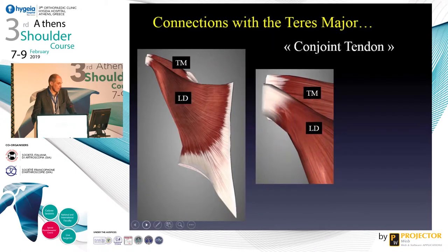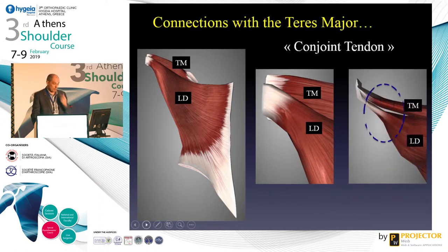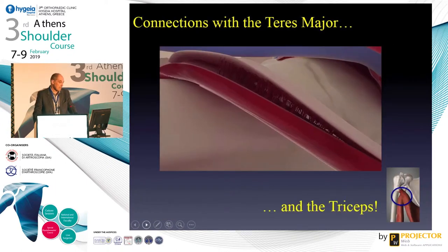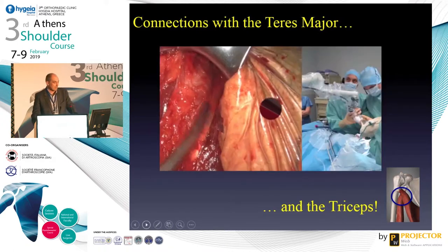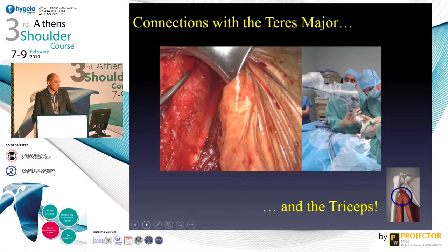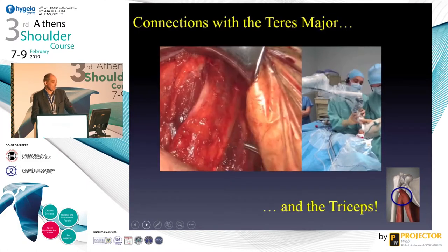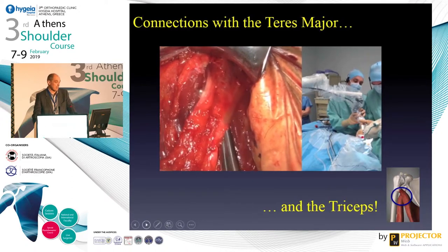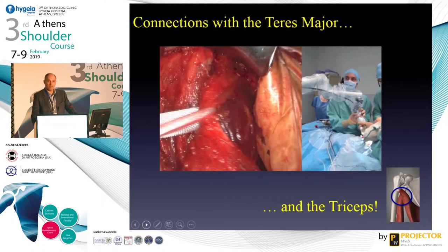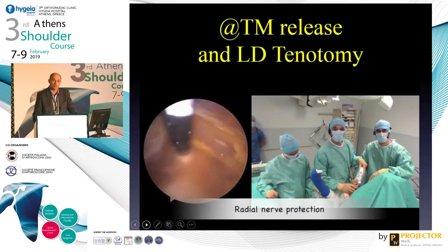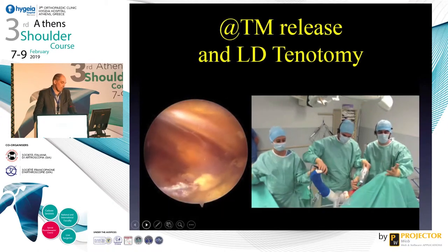After that, you have to separate the lat dorsi from the teres major - this is probably the most demanding step to do, because there are anatomical variations and very close connections between them. This is what you have to do: in the open procedure you separate and release the lat dorsi from the teres major. You also have to make it arthroscopically to separate them, because it is not possible to take both if you want to go anteriorly to the subscap.